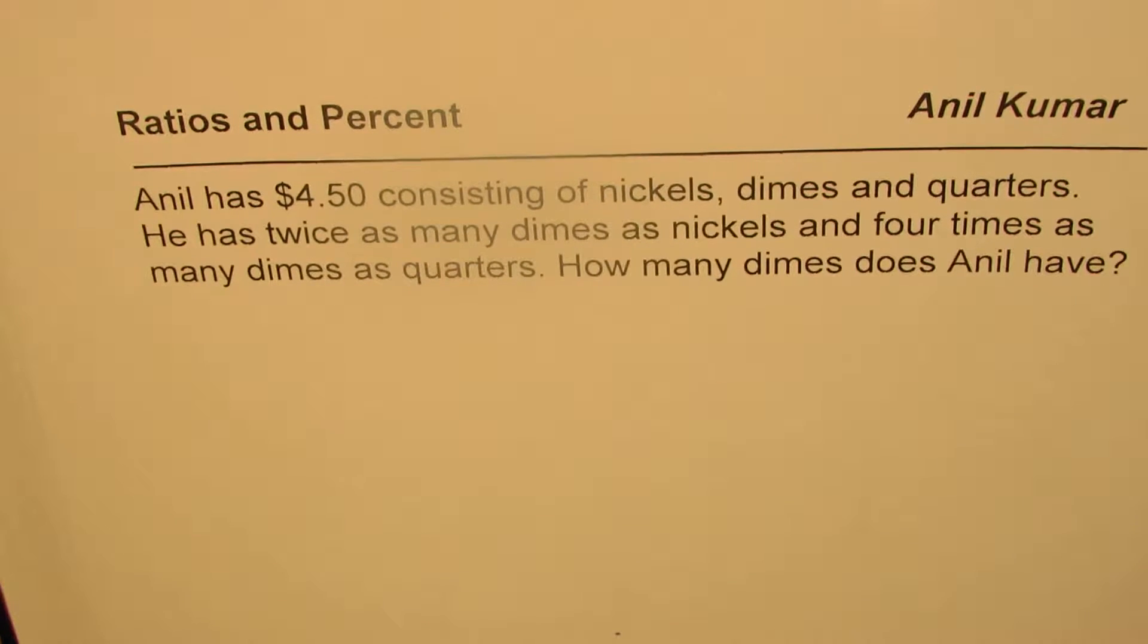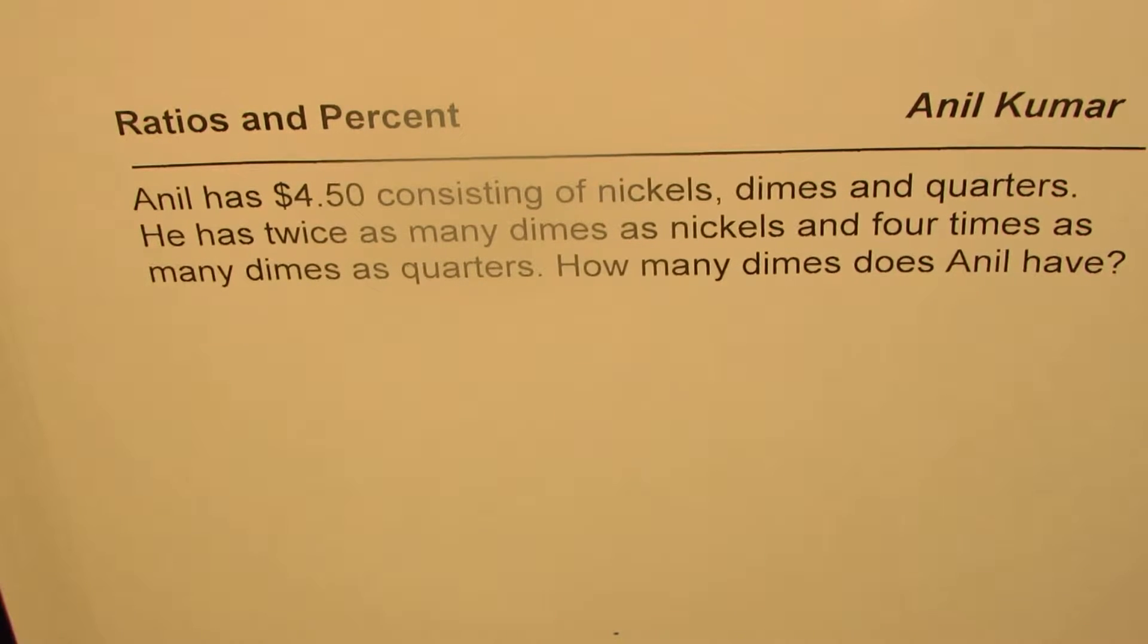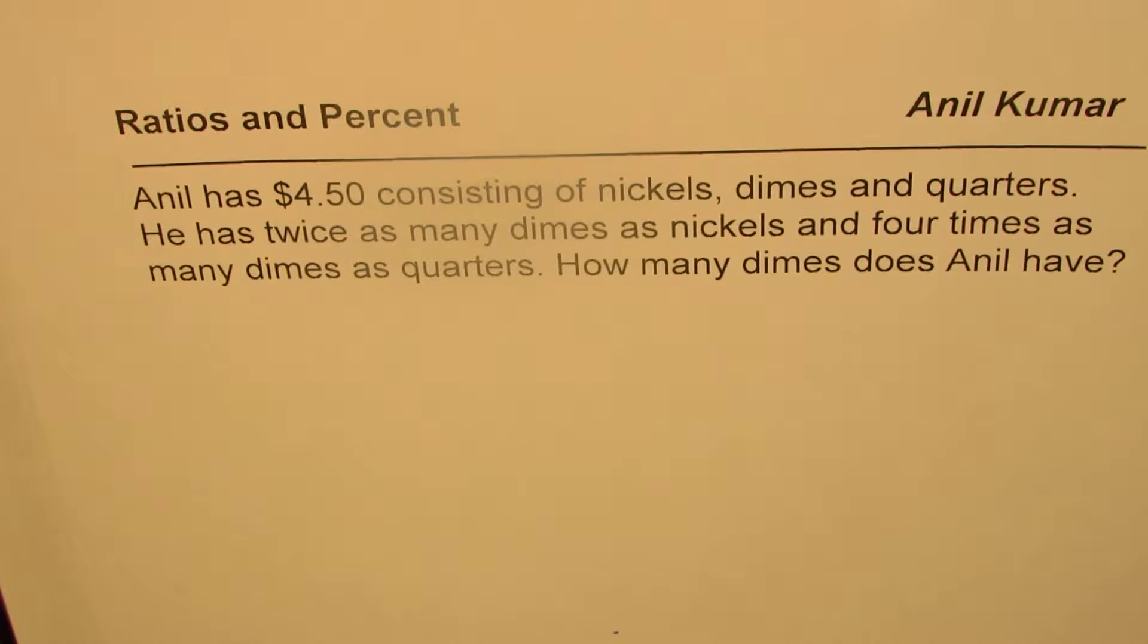I'm Anil Kumar and here is a very interesting question on ratios and percent. Anil has $4.50 consisting of nickels, dimes and quarters. He has twice as many dimes as nickels and four times as many dimes as quarters. How many dimes does Anil have? So that's the question for you. You can pause the video and answer the question.